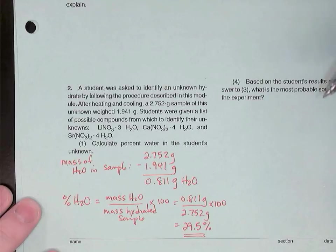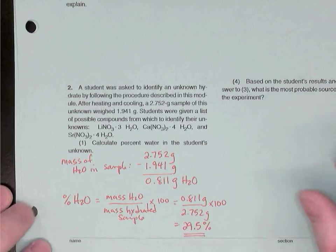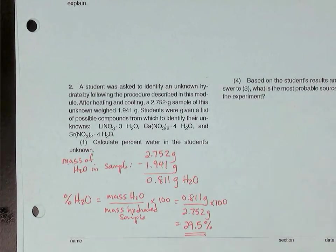So first, calculate the percentage of water in the student's unknown. This is how I'd like to see your work shown, something to this effect. If you just put an answer down for this, you're going to have to fix that.